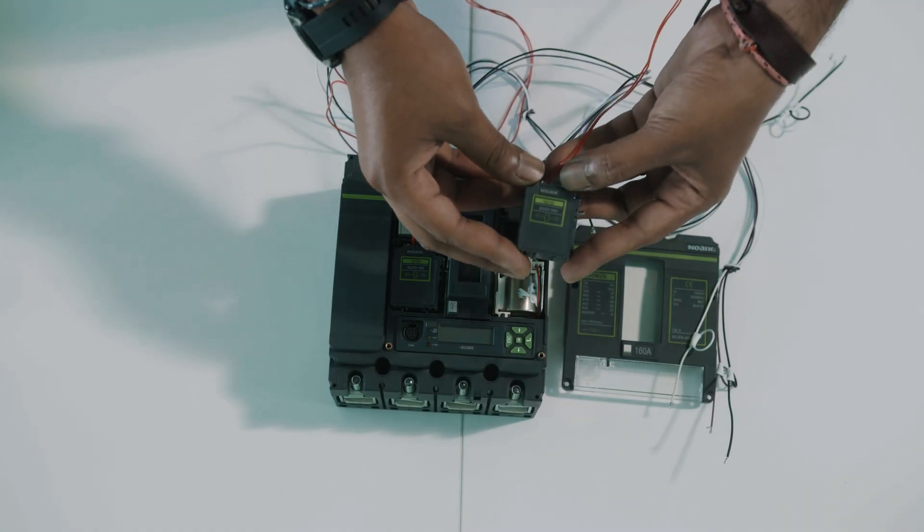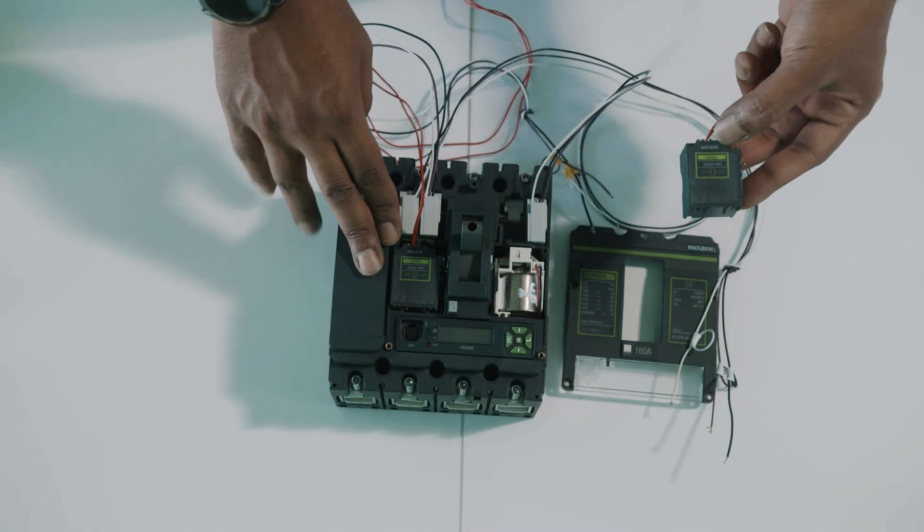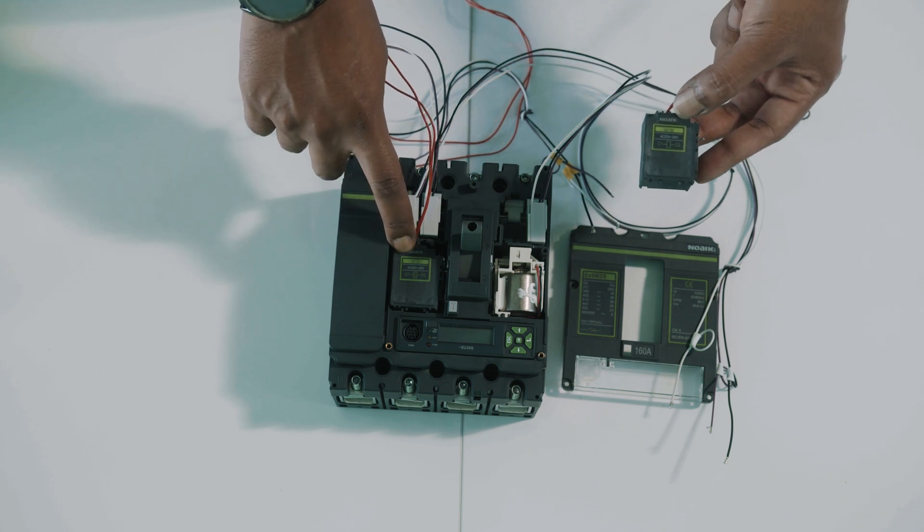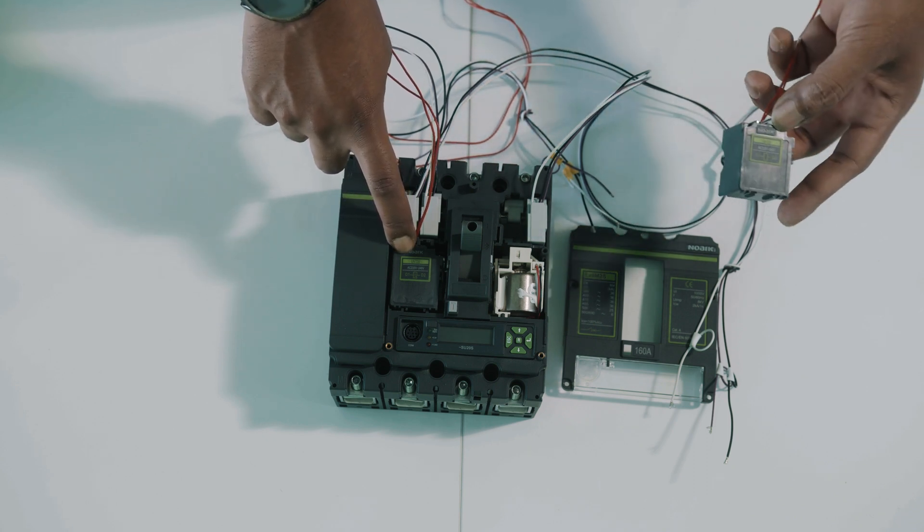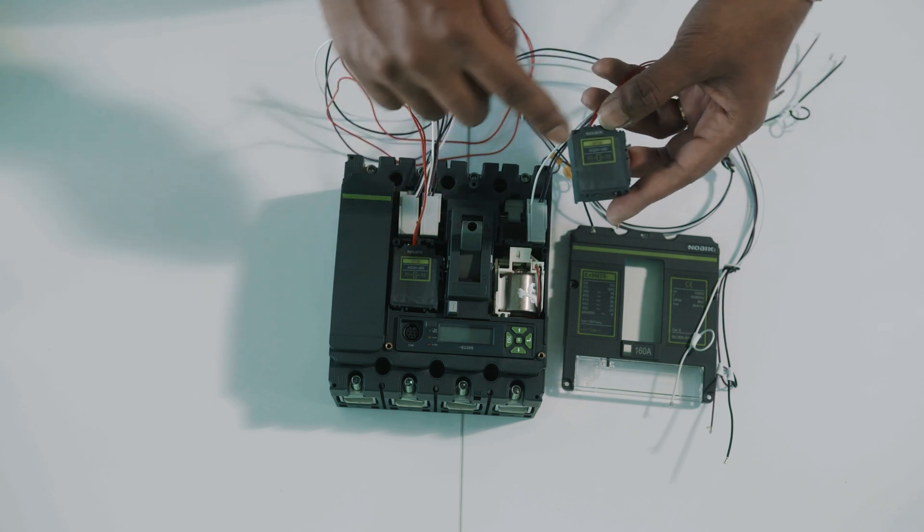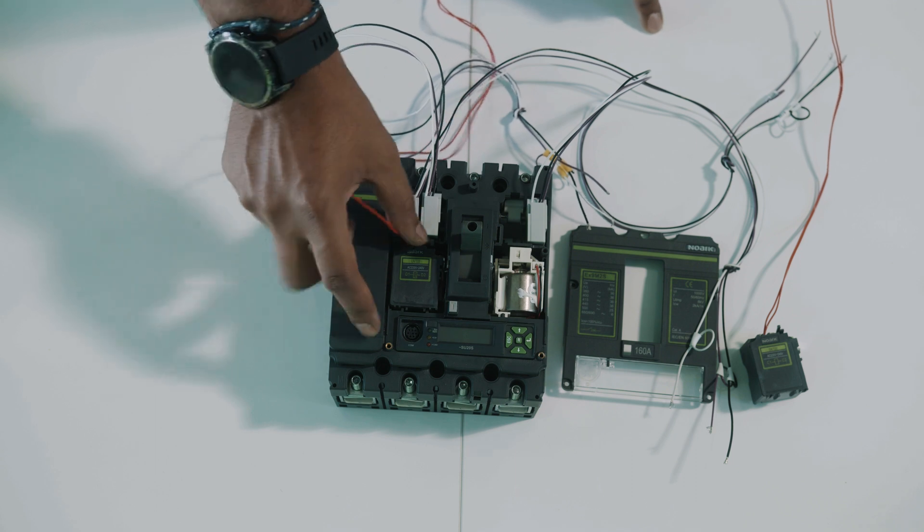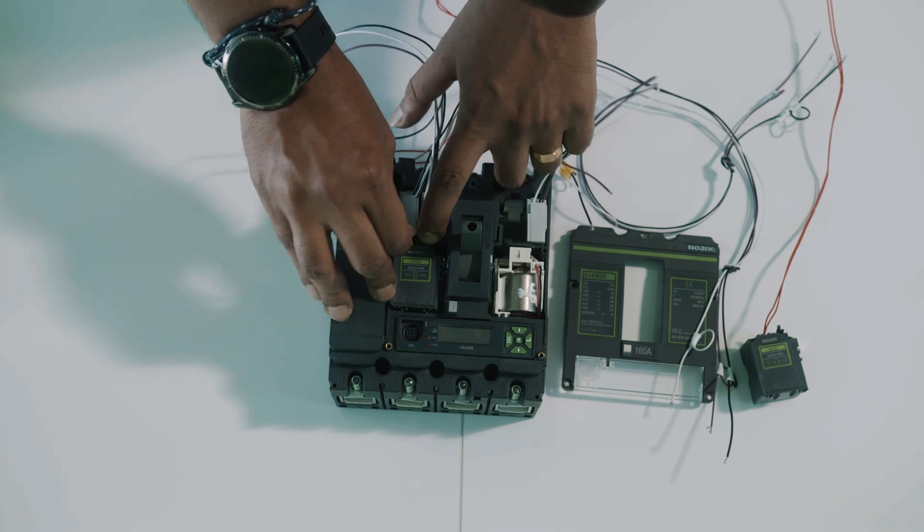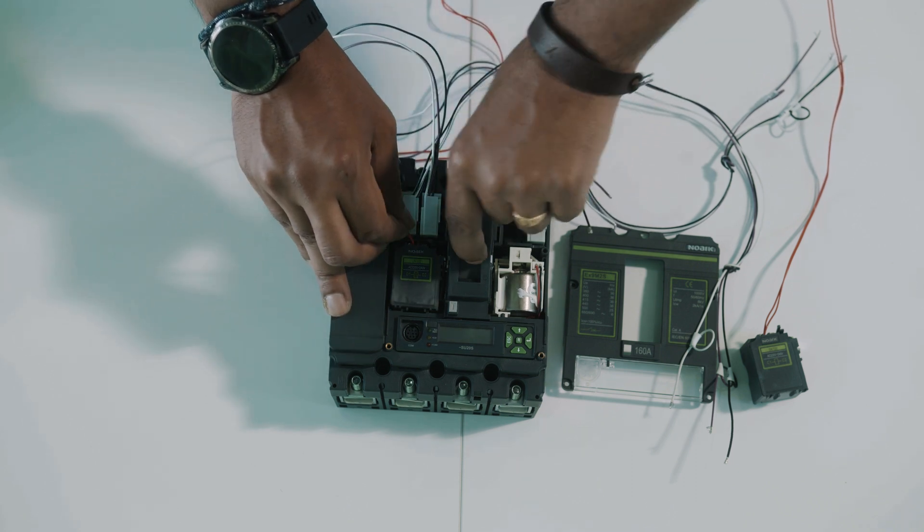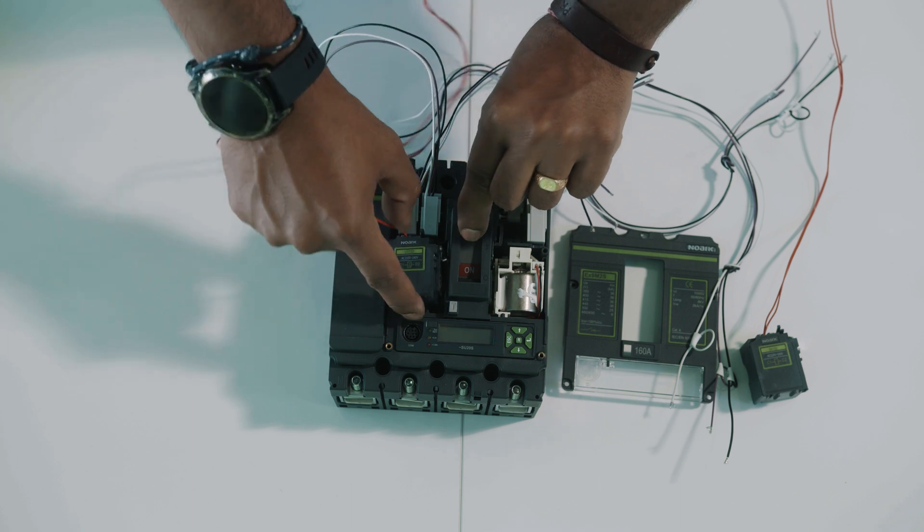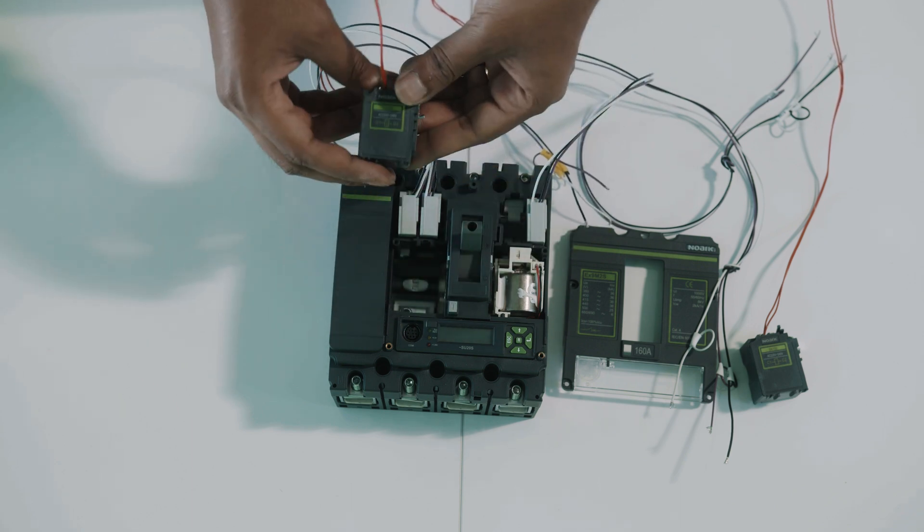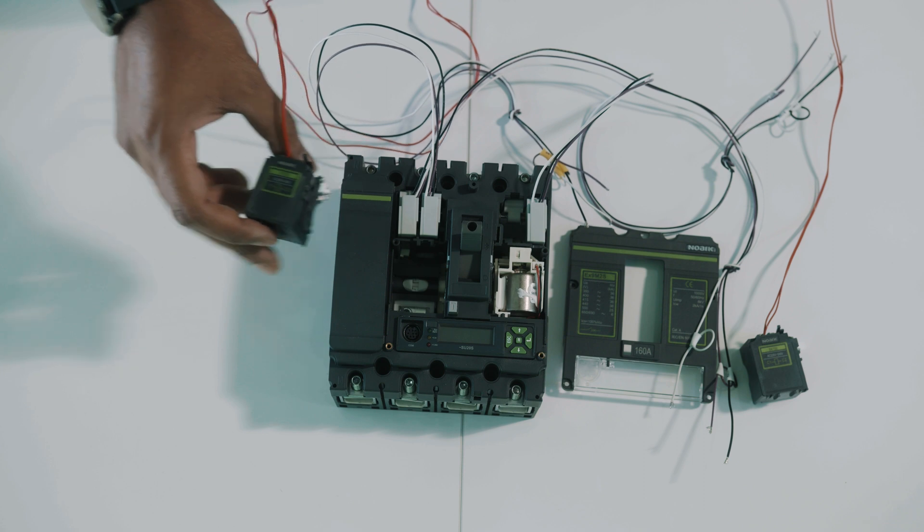So we will install the SHT. In order to install the SHT we will have to remove the UVT installed previously. As we were saying before only one of these releases can be installed at the same time. For installing the UVT we will need to press the lock, remove it and at the same time switch on the toggle. In this way the unit will be released and will be free to take it out.